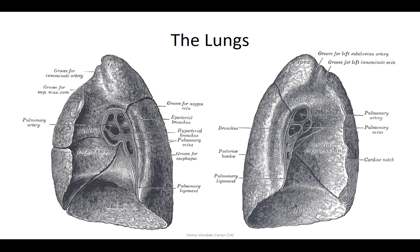We can also see the impressions left by structures such as the vena cava and esophagus on the right lung and the arch of the aorta on the left. In looking at the overall shape of the lungs, we notice that they are concave along the mediastinal and diaphragmatic surfaces and convex along the thoracic surface.